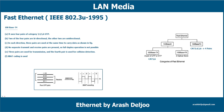About 100Base-T4: it uses 4 pairs of category 3, 4, 5, or 6 cable. In most cases, category 3 is used because we don't want to upgrade the cables. Two of the four pairs are bidirectional and the other two are unidirectional. In each direction, three pairs are used at the same time to carry data. Three pairs are used for transmission and the fourth pair is used for collision detection.